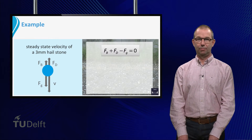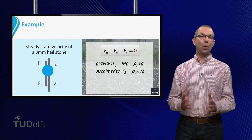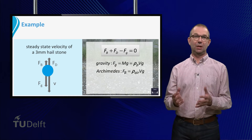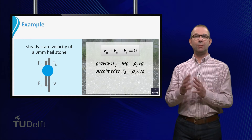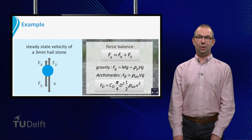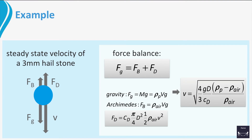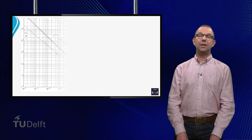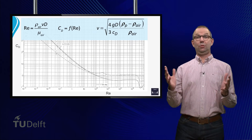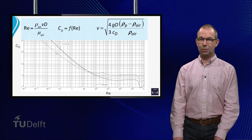This is given by F_buoyancy plus F_drag minus F_gravity equals zero. Each force can be modeled: gravity equals mass of the hailstone times g; buoyancy equals the mass of displaced air times g, which is rho_air times the volume of the hailstone times g; and the drag force we know. Putting these expressions into the force balance and solving for V gives V equal to the square root of (4/3 · g · d / CD) times (rho_hailstone minus rho_air) divided by rho_air. This equation cannot be solved directly, as we don't know CD — and moreover we need V to find CD.